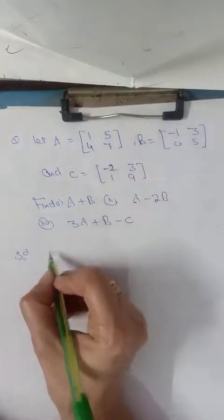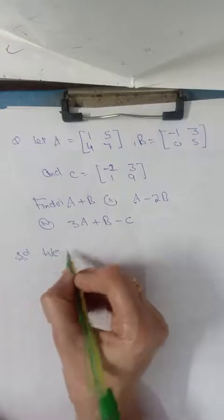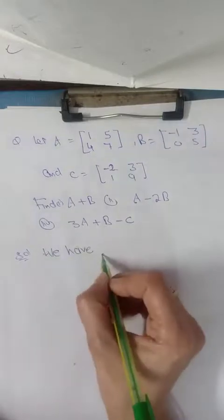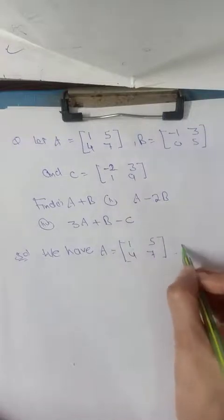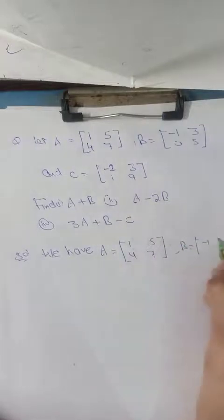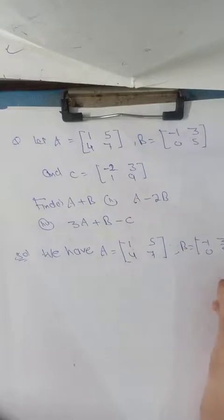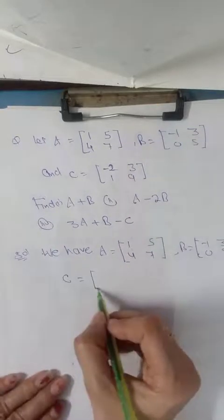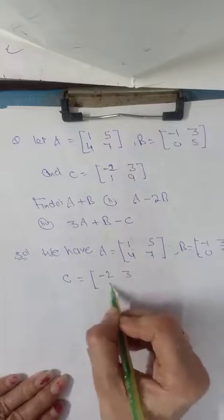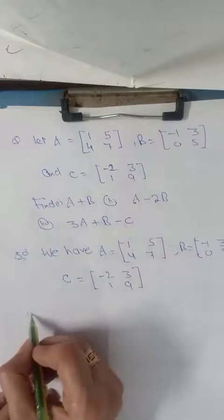First, we have matrix A equals to 1, 5, 4, 7. Matrix B equals to -1, 3, 0, 5. And matrix C equals to -2, 3, 1, 9.